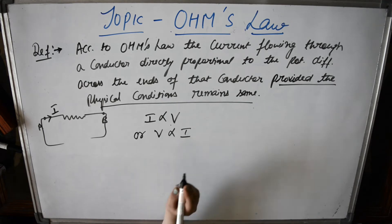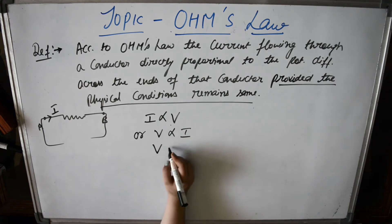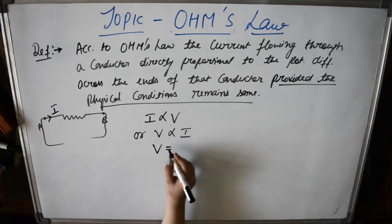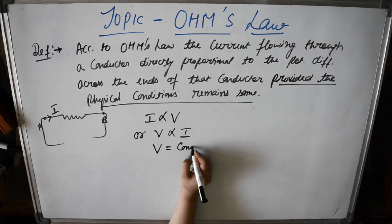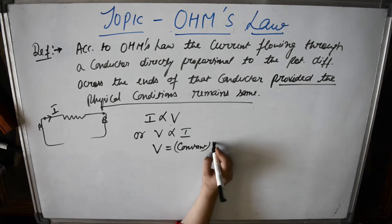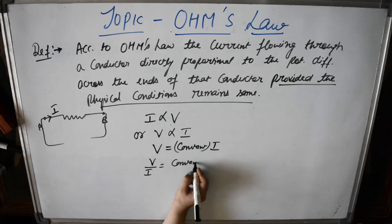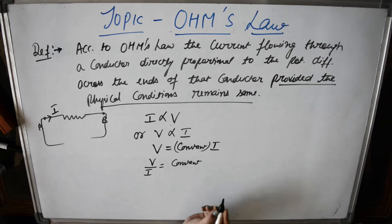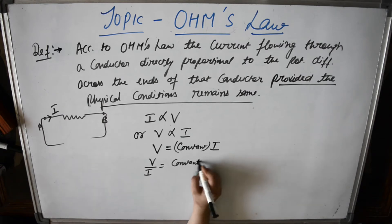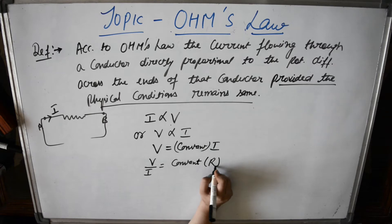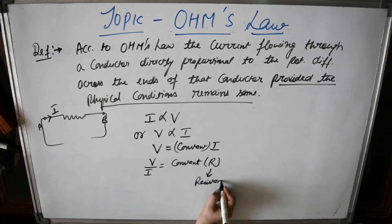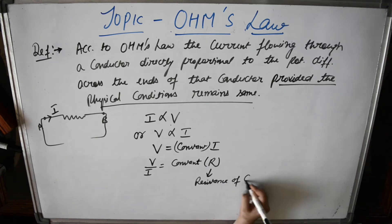V is directly proportional to I. If you want to change this to an equality, proportional becomes equal to when we add a constant, so V equals constant times I. Or you can say V upon I equals a constant. And this constant we represent as R, which is also known as the resistance of the conductor.